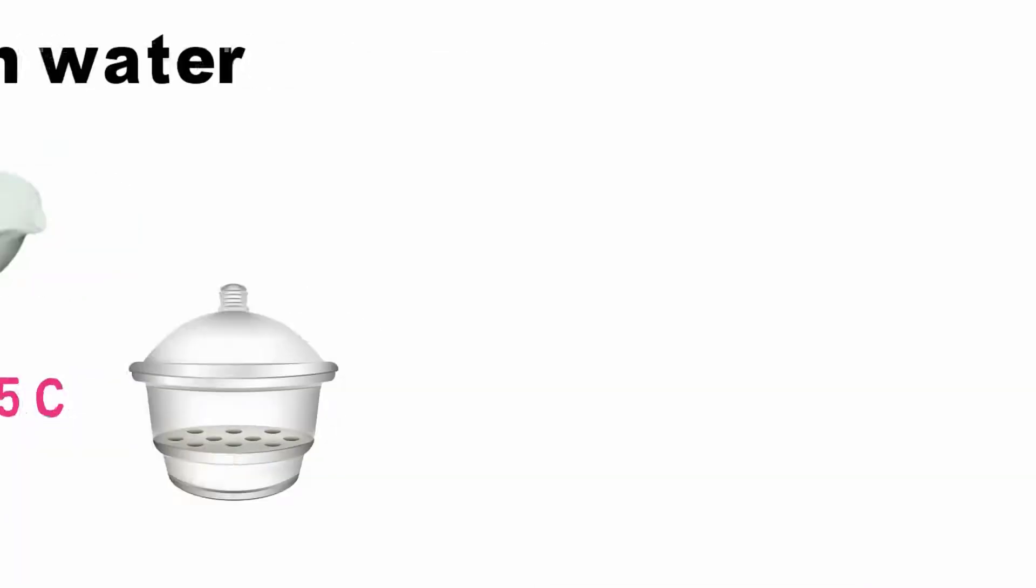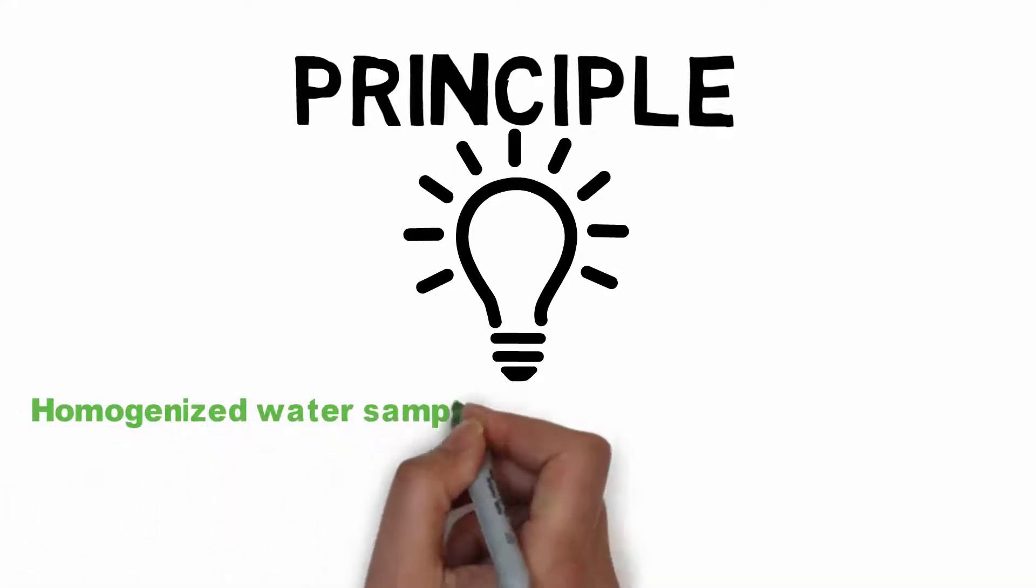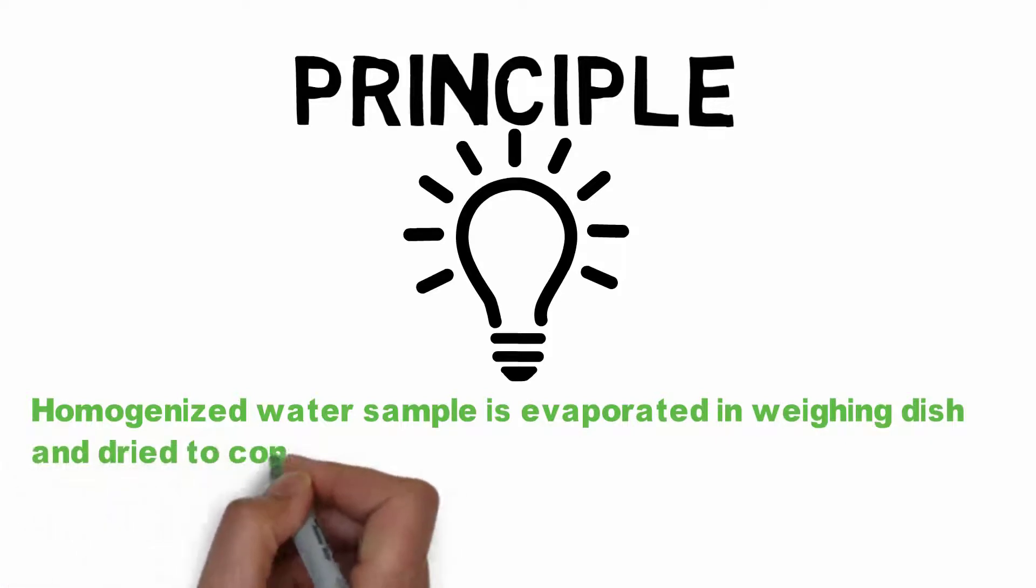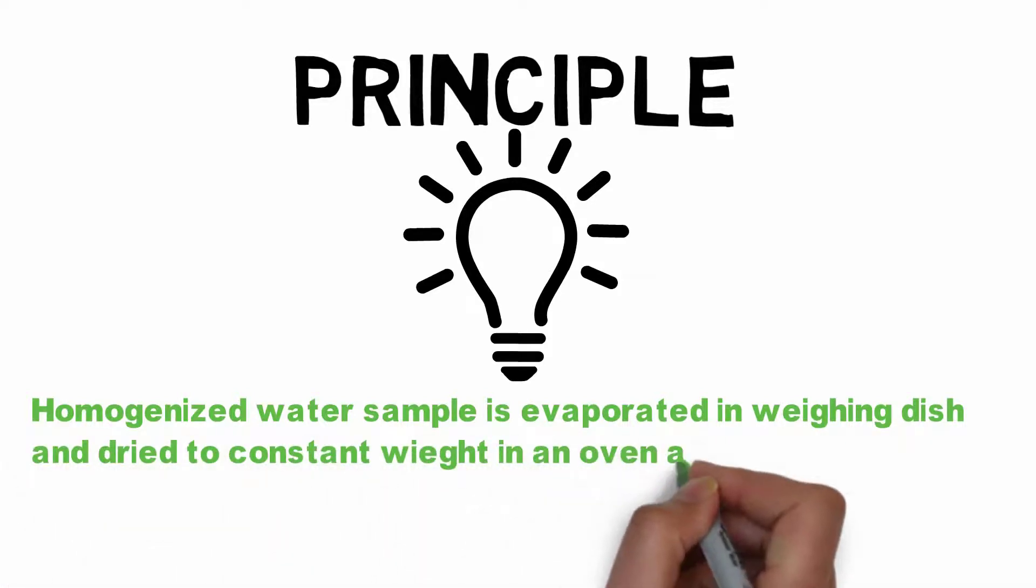Now the principle: A homogenized water sample is evaporated in a weighing dish and dried to a constant weight in an oven at 103 to 105 degrees.